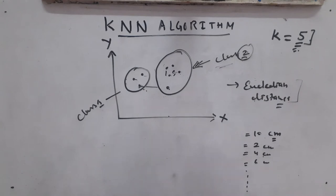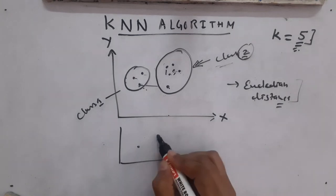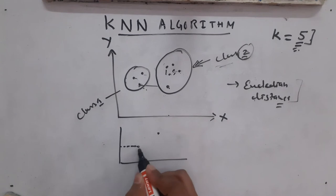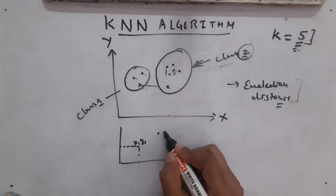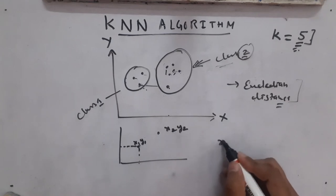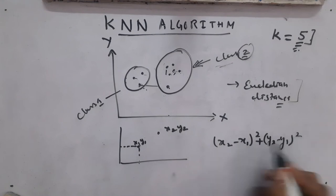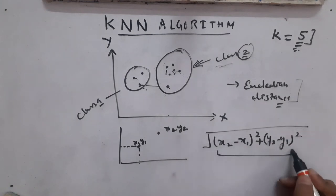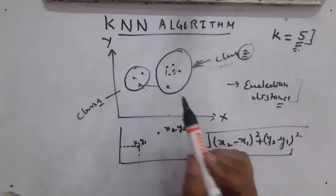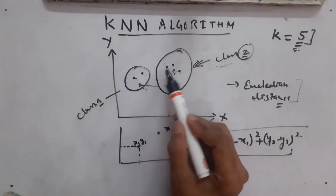As I mentioned, we calculate Euclidean distance — something we learned during school. To calculate the Euclidean distance between two points: assume one point has coordinates (x1, y1) and another has (x2, y2). The Euclidean distance between these two points is the square root of (x2 - x1)² + (y2 - y1)². This formula gives us the Euclidean distance, and we use it to calculate the distance from the new data point to all existing data points.